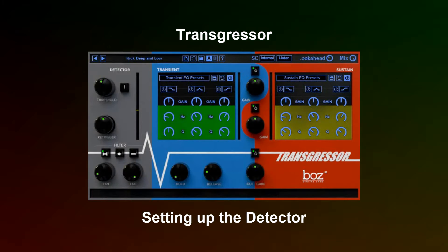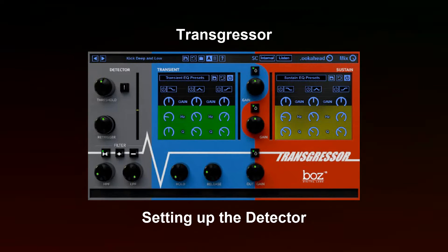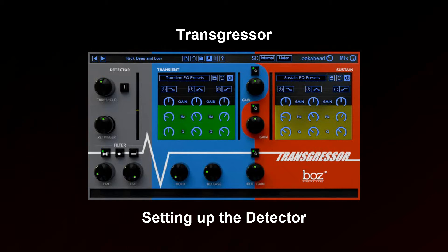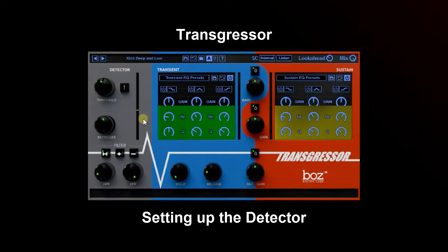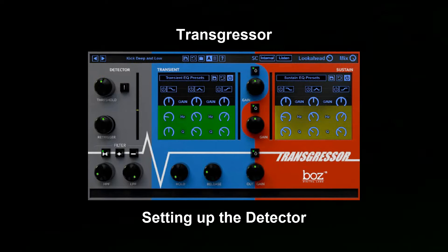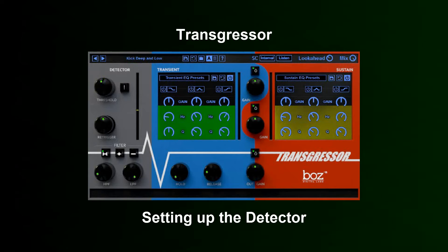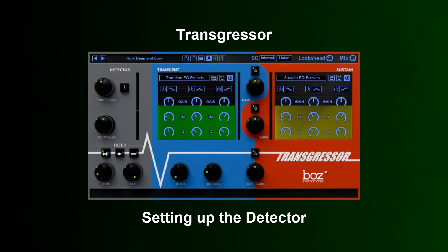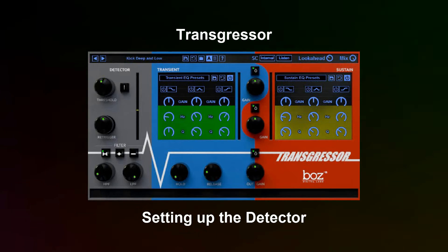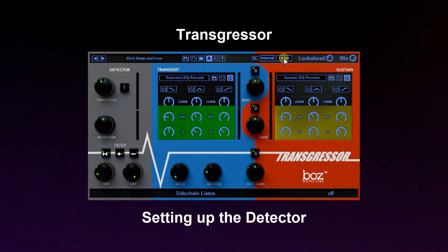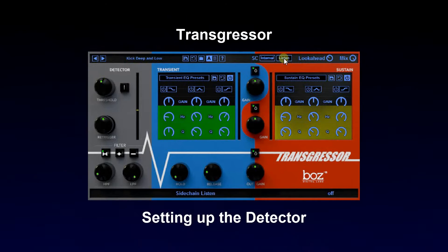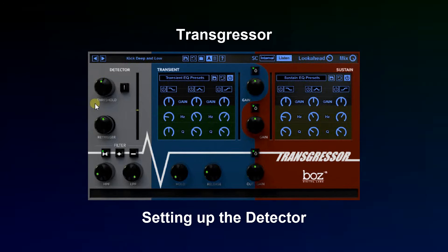I'd like to walk you quickly through how to set up the detector. The detector section is this gray area over here, and what it does is it determines what is a transient and what is not. The easiest way to set this up is to first press this listen button — it will let us hear what...